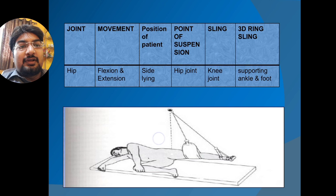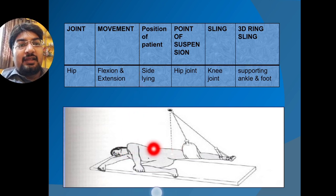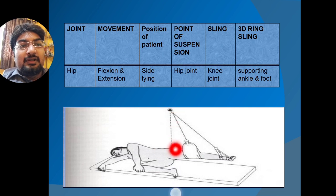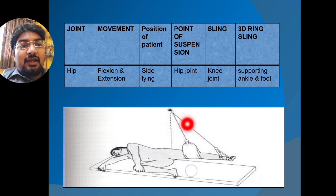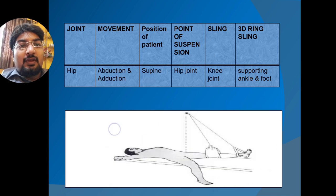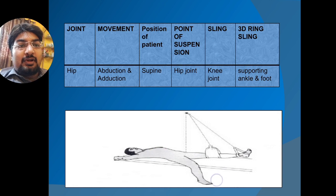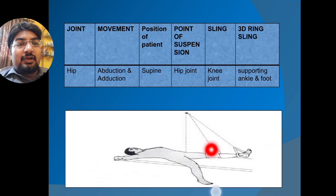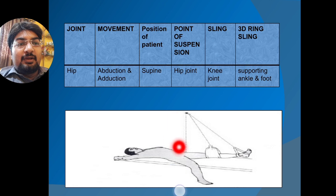For hip flexion and extension, the patient is in a side-lying position with the point of suspension at the hip joint. One sling supports the knee joint and a 3D-ring sling supports the ankle and foot. For hip abduction and adduction, the patient is in a supine position with the contralateral leg abducted, point of suspension at the hip joint, and one sling supporting the knee.